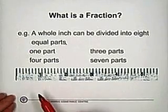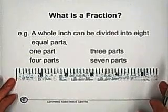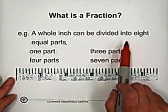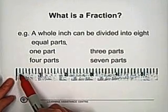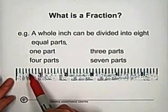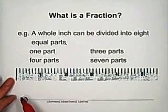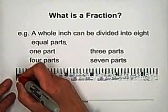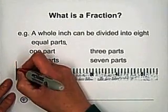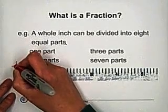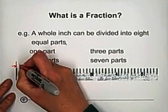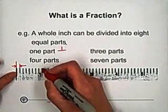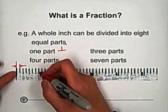If we look at a ruler, this is one inch. A whole inch can be divided into eight equal parts: one, two, three, four, five, six, seven, eight — eight parts. For one part, we can label here. This is one part. Because this one part has a total of eight equal parts, it is one over eight.